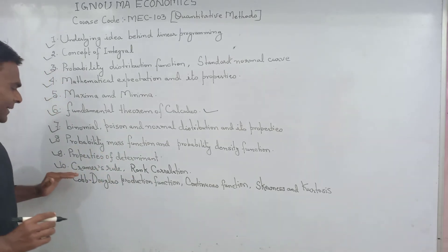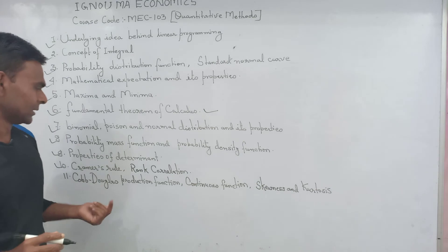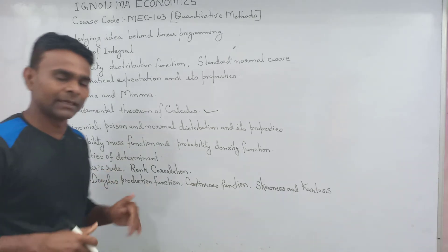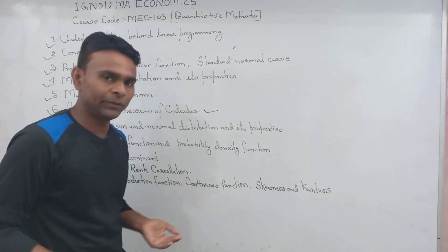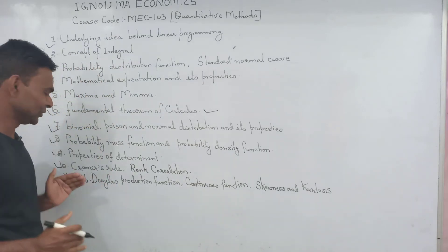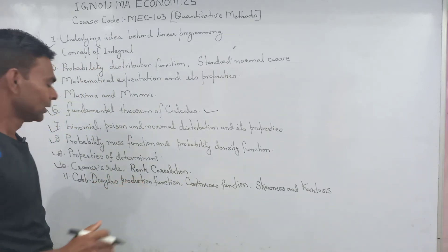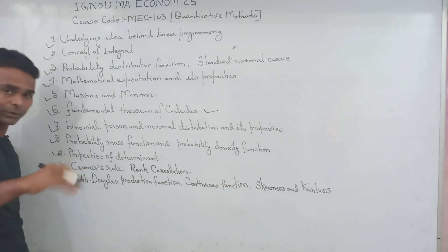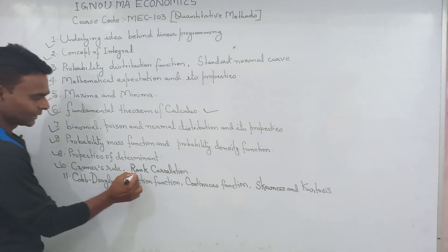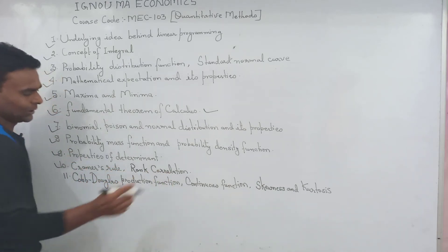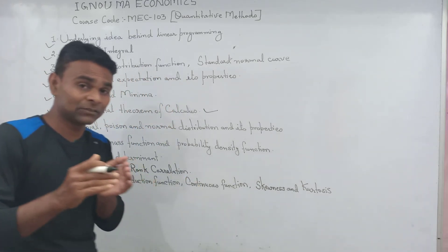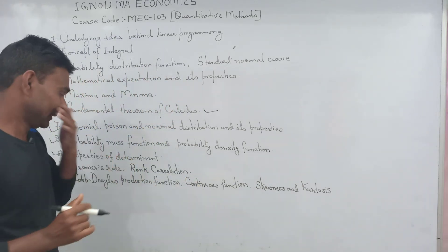How to solve using Cramer's rule for a given set of simultaneous equations. Rank correlation — what do you understand by rank correlation? Give a suitable example.